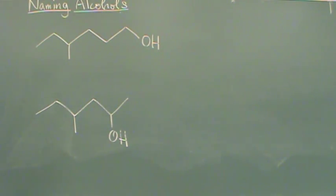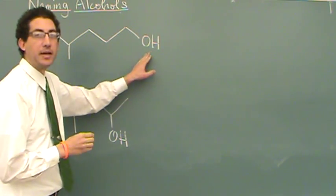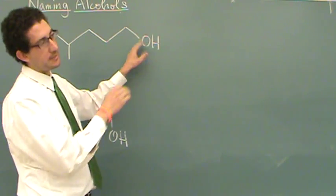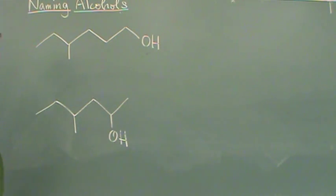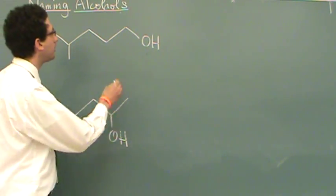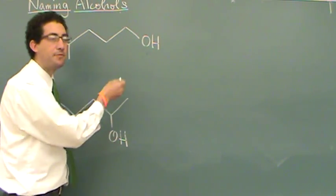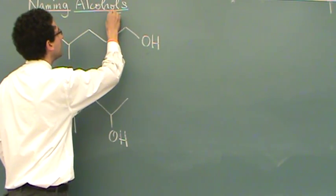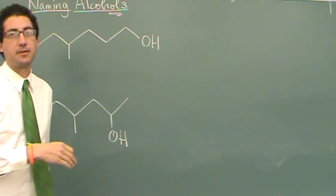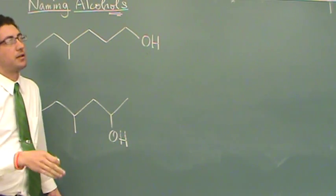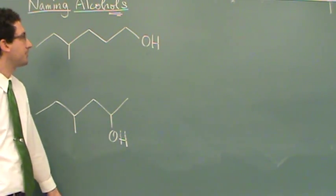All right, we're going to learn how to name some alcohols right now. And when you're naming an alcohol, that's anything with an OH group. Those, as a substituent, would be called a hydroxy group. But if it's the main functional group, if it's a functional group with priority, we call it alcohol. And then the name for an alcohol is always going to end in an OL. So you'll hear names like propanol, pentanol, hexanol, etc.